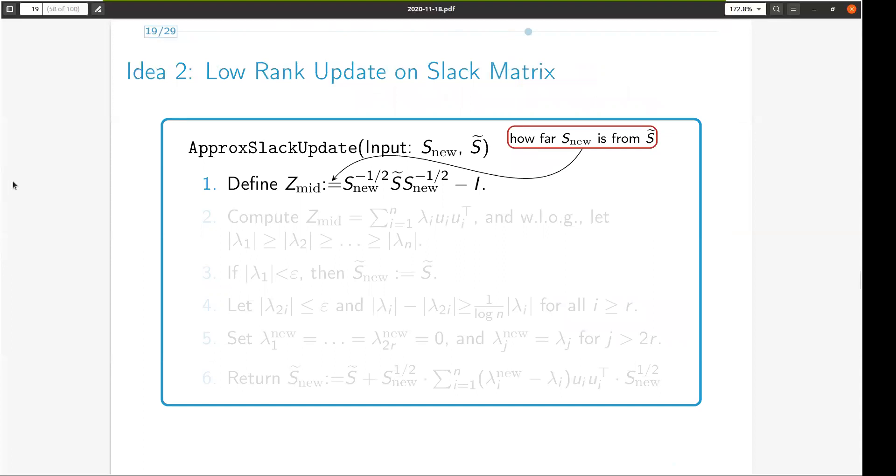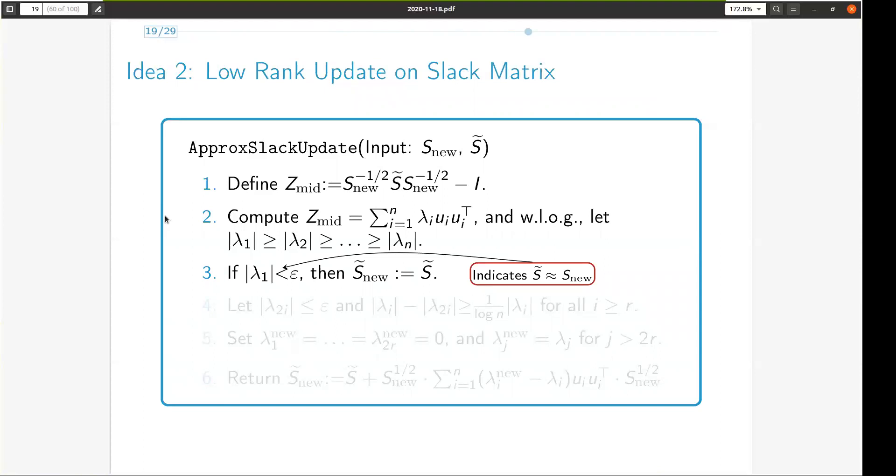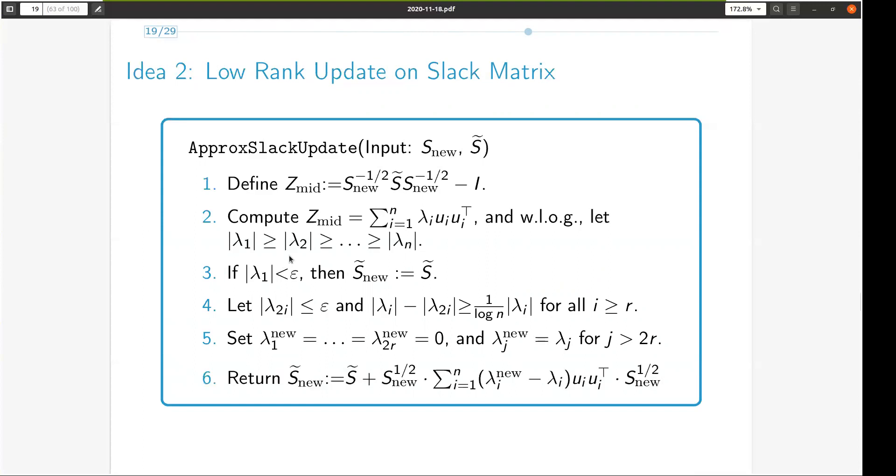To construct the approximate slack matrix, we take as input the new slack matrix and the approximate current slack matrix, and compute the matrix z mid as shown here. This matrix measures in some sense the difference between s tilde and s nu. We then perform the eigen decomposition of z mid and arrange its eigenvalues in descending order of their magnitudes. If the largest eigenvalue of magnitude is small, then we set s tilde nu to s tilde. Otherwise, we find the index r which demarcates the small eigenvalues from the large ones according to this specific rule. We then set these initial 2r large eigenvalues to 0 and keep the remaining eigenvalues the same, and construct s nu tilde in the following way, which ensures that z nu has the same eigenvalues as the small eigenvalues of z mid. Note that the total change in rank from s tilde to s tilde is 2r.